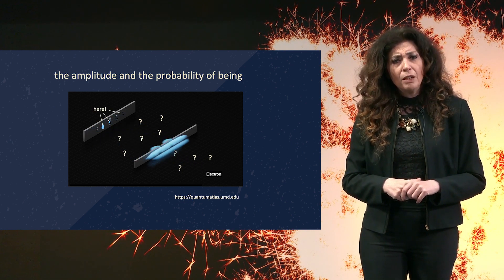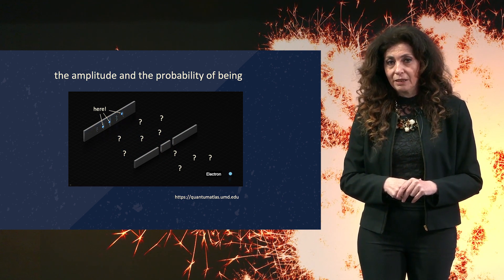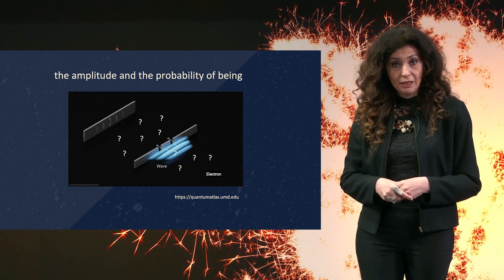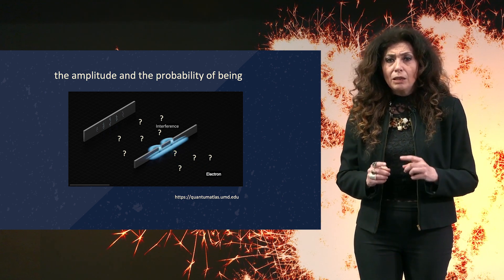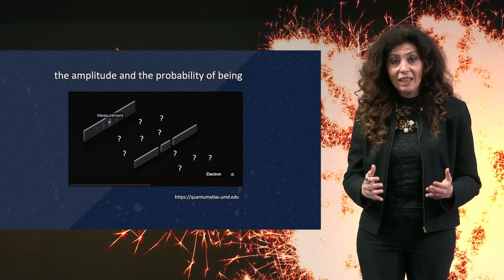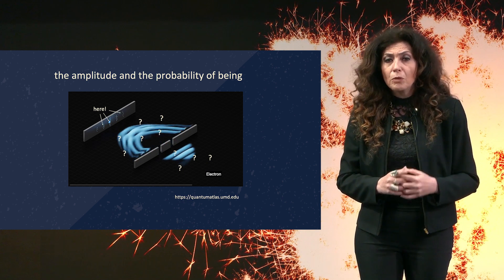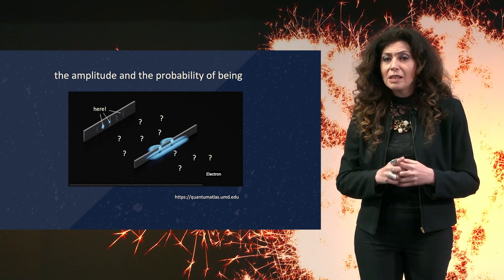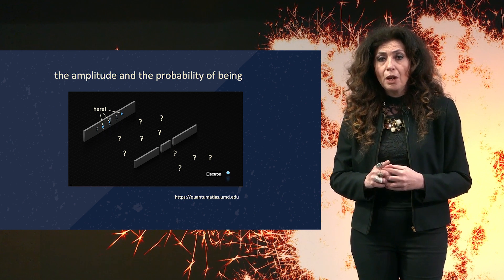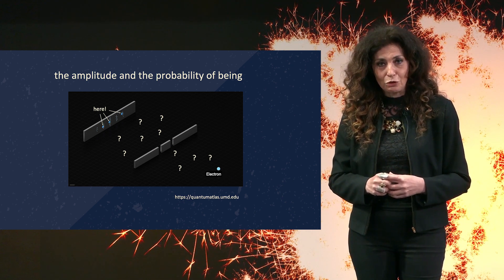But where is the electron before touching the final plate? Does it pass through the right or the left slit? It looks as if the electron passes through both slits, interfering with itself like a wave. But beware, what is illustrated here is not the electron's position itself, but its probability of being found in a given position.